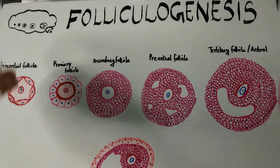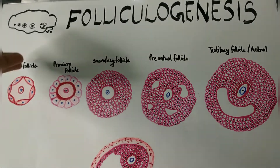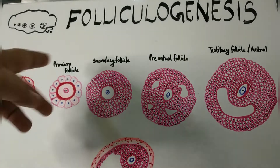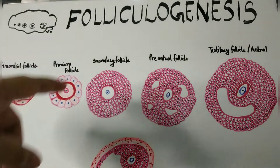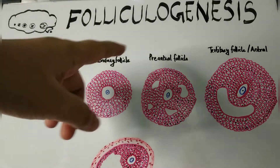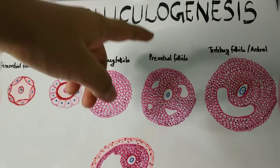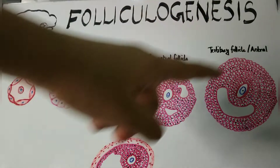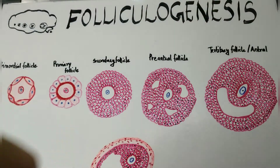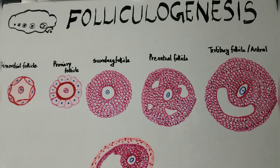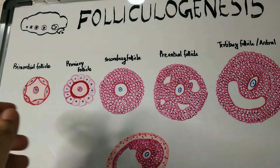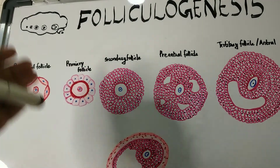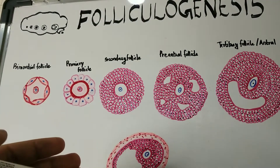Here you can see the primordial follicle, primary follicle, secondary follicle, preantral follicle, tertiary follicle, and the Graafian follicle.